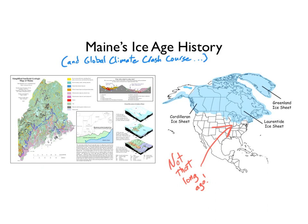Today we're going to talk about Maine's Ice Age history in our uber-condensed unit, due to circumstances beyond our control, on climate change. We're also going to talk a little bit about global climate — kind of a crash course format. We're doing the greatest hits of this unit.